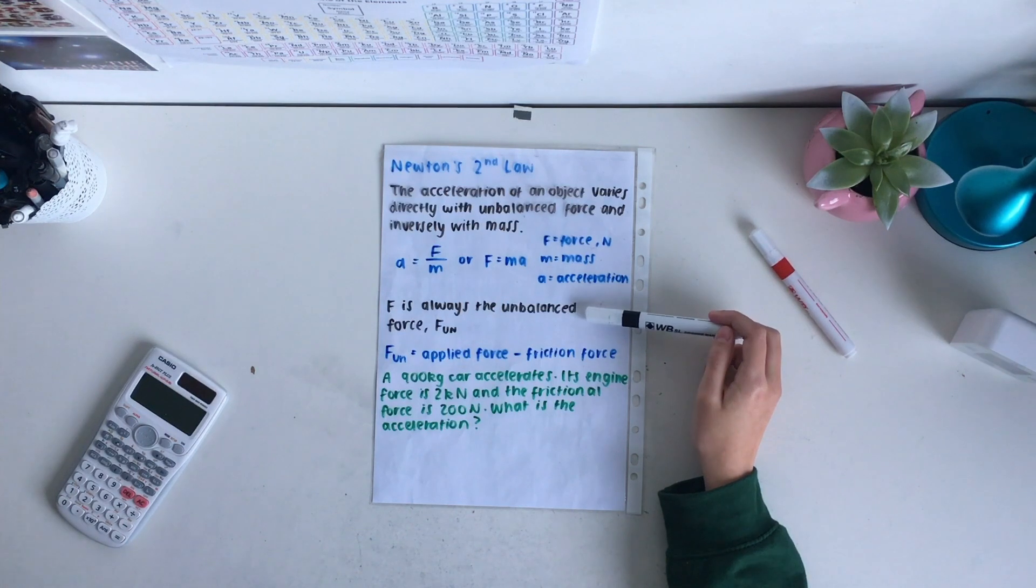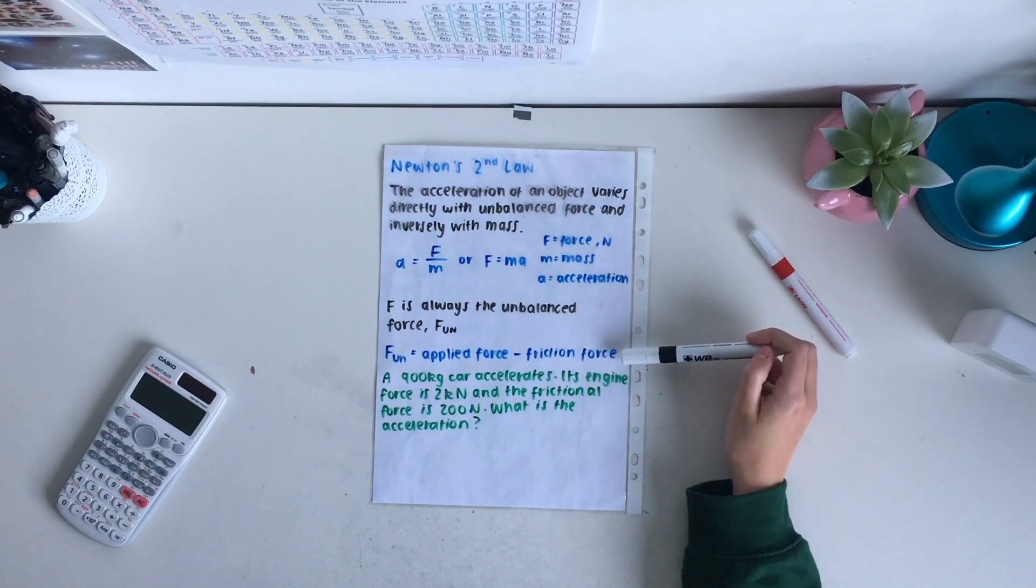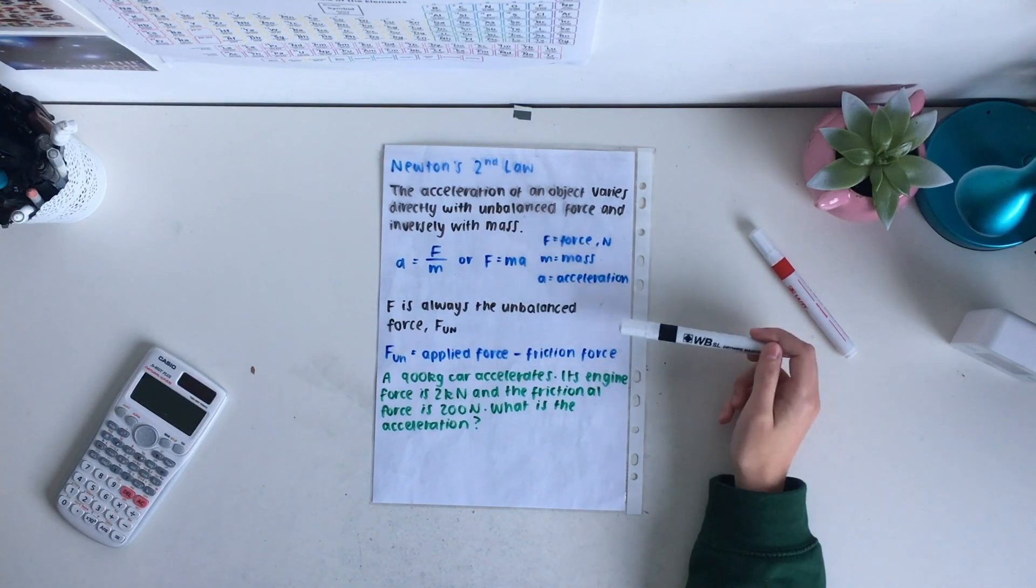The F in Newton's second law is always the unbalanced force, and this usually has to be found by using the applied force, take away the frictional force to find the unbalanced force in the direction the acceleration is in.